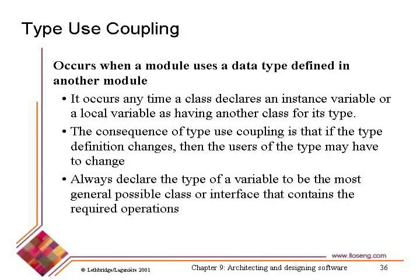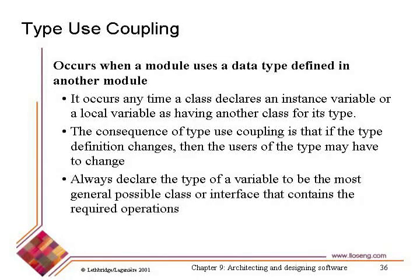Type use coupling is similar to stamp coupling, but stamp coupling is more insidious since it involves the types of method arguments, whereas ordinary type use coupling is using types for local variables and instance variables. Obviously when defining associations between classes, you have to declare variables of the type of the class on the other side, so type use coupling occurs automatically any time you have an association. One strategy for reducing type use coupling is to use interfaces, which will tend to reduce the amount of type use coupling.